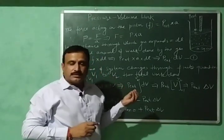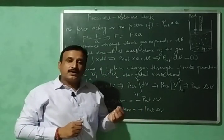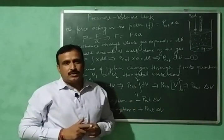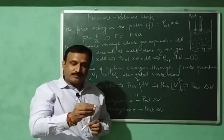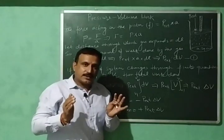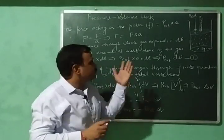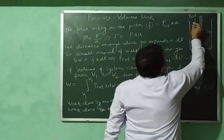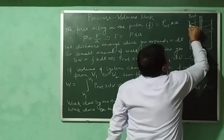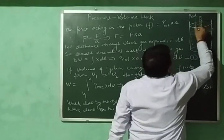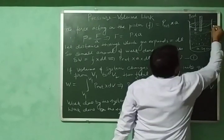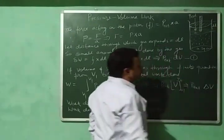For expansion, let us suppose that external pressure is slightly less than the internal pressure of the gas. When external pressure is less than internal pressure, the gas will expand. Suppose the gas expands through a distance dL, such that the gas expands to a new position — the new position of the piston — and this distance is dL centimeters.